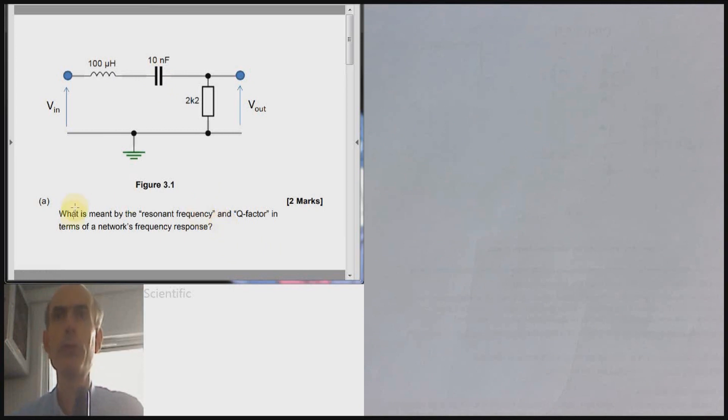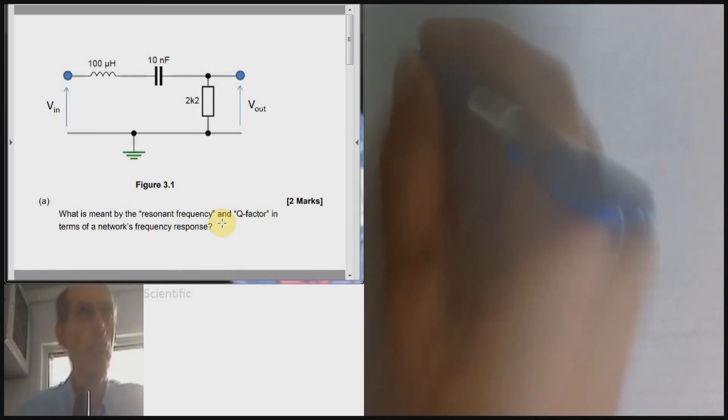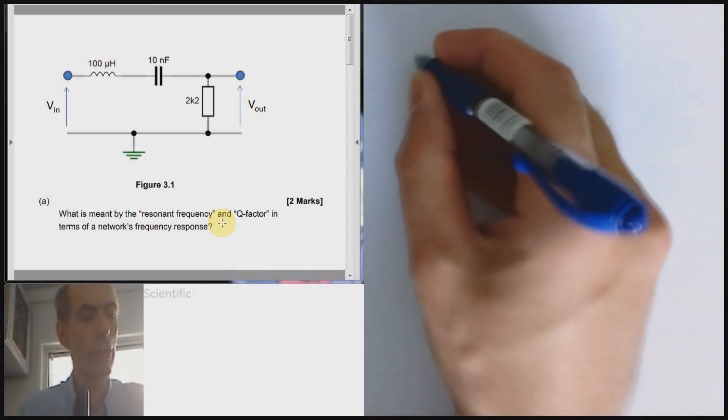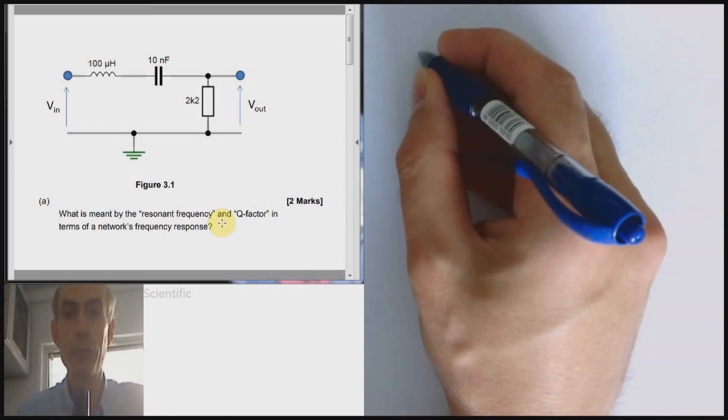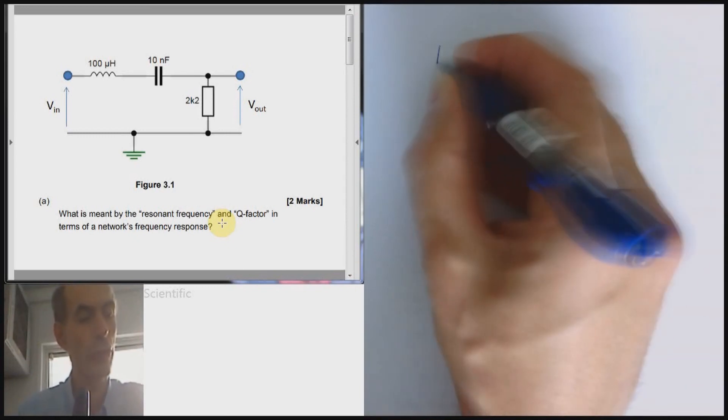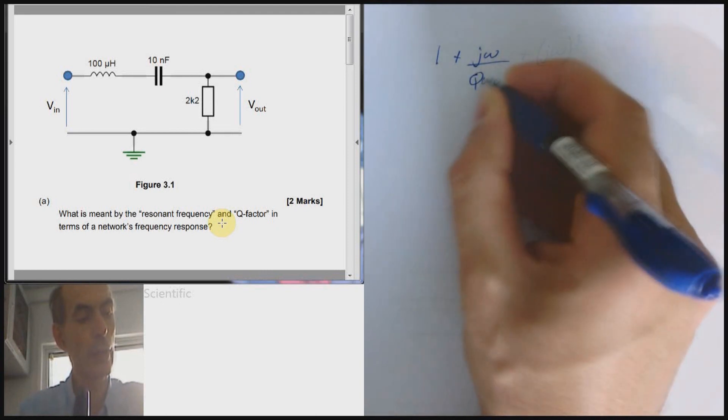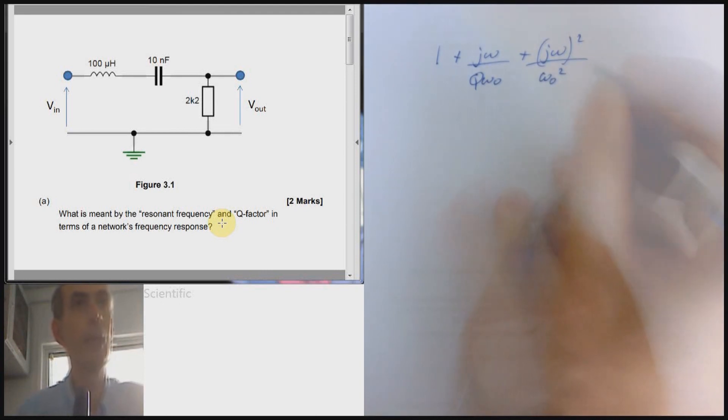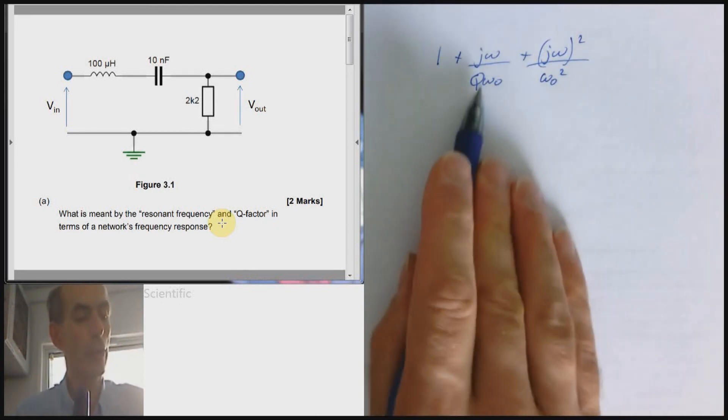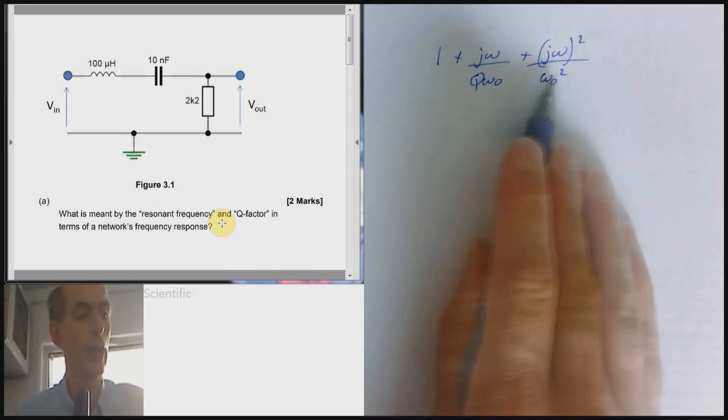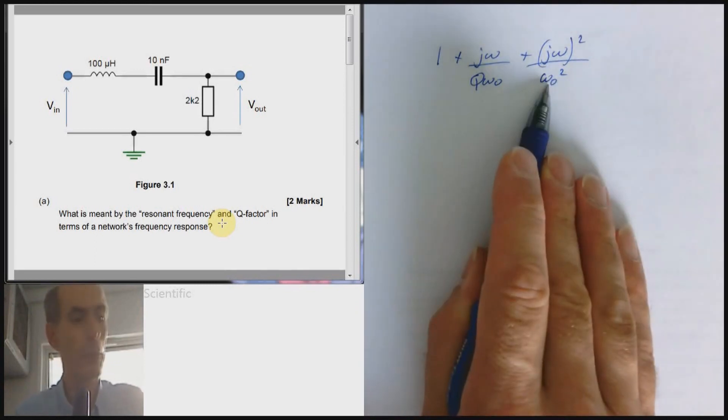First bit of the question, as usual a bit of book work. What is meant by the resonant frequency and Q factor? There's only two marks available so I'm only looking for two points in the answer, so almost anything sensible would do. You could for example note that the standard form of a second order response has this equation and point out that that is the definition of Q factor and resonant frequency. That would be fine.